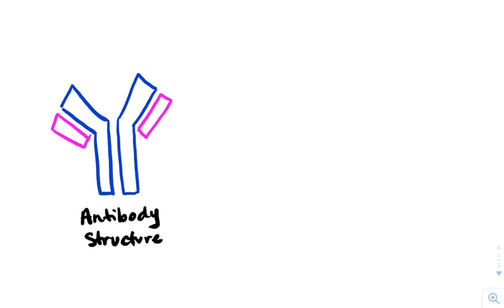This is a quick video on antibody structure for those of you that needed a little bit of extra help. Antibodies are Y-shaped proteins made up of heavy chains, which are shown here in blue, and light chains.